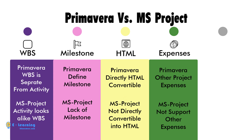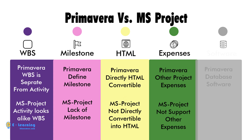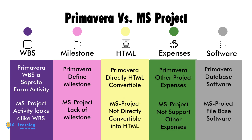Primavera is database-based software, but MS Project is file-based software.